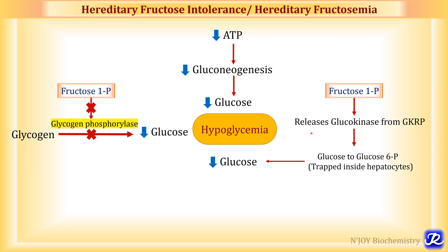But fructose 1-phosphate causes release of glucokinase from the glucokinase regulatory protein. Once free, glucokinase acts on glucose to form glucose 6-phosphate, trapping whatever glucose is present inside the hepatocytes. In blood, there will therefore be decreased glucose concentration — all these mechanisms are responsible for hypoglycemia in hereditary fructose intolerance.